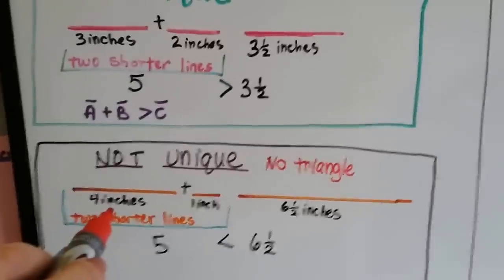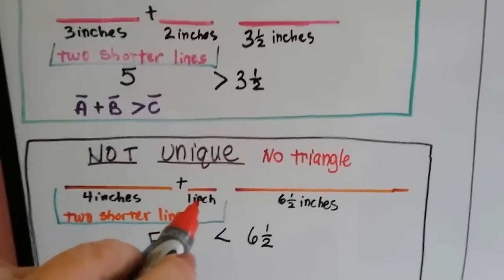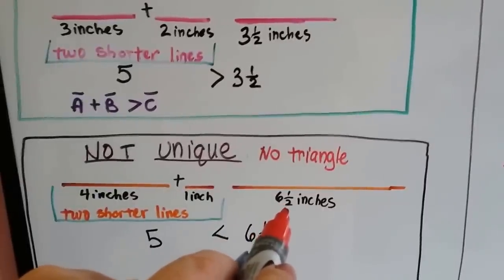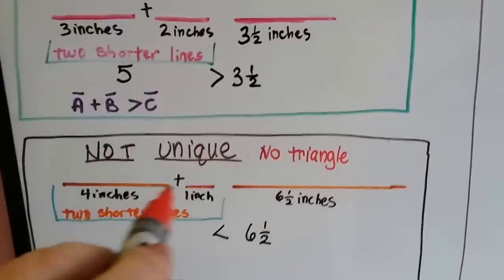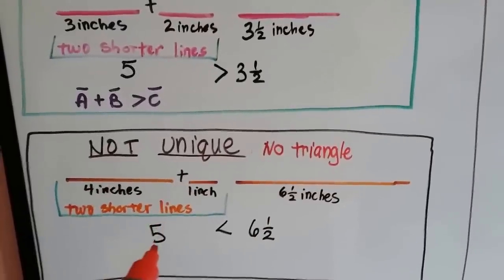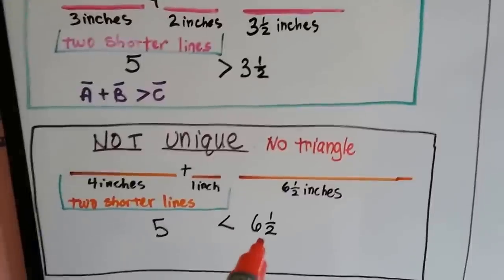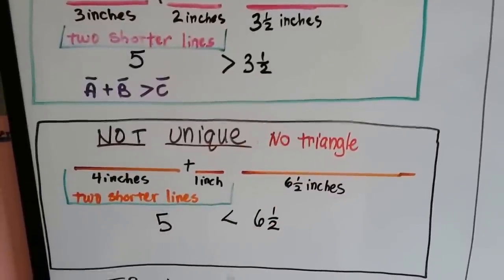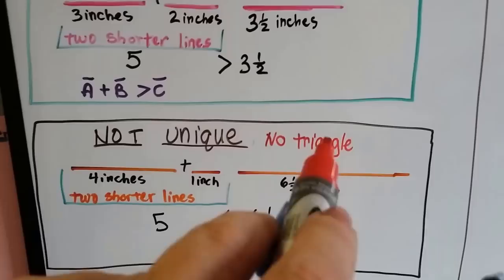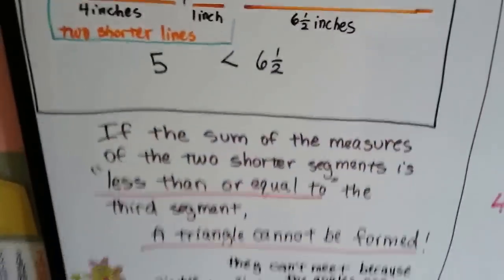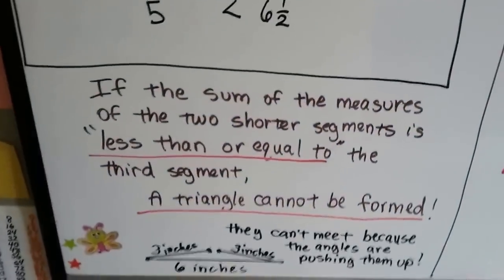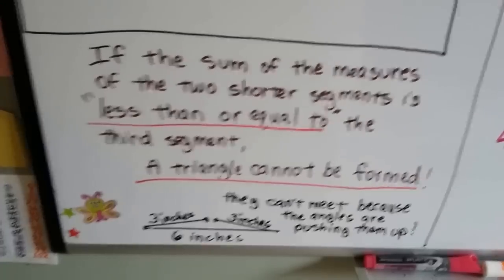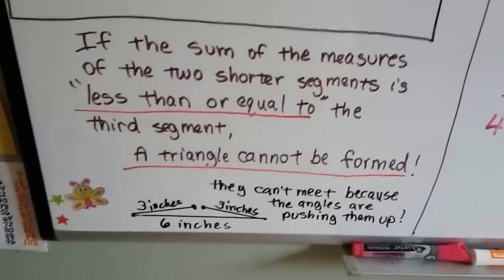Let's say one length is four inches, another is one inch, and the last is six and a half inches. The two shorter lines added together is five, and that's not greater than six and a half — this wouldn't even make a triangle. If the sum of the two shorter segments is less than or equal to the third segment, a triangle can't be formed.